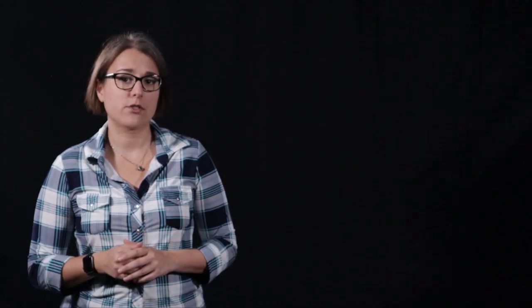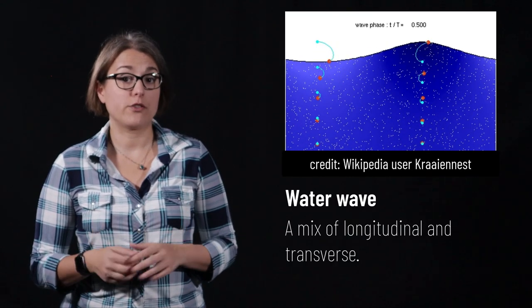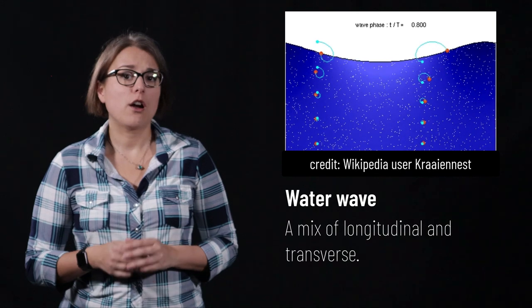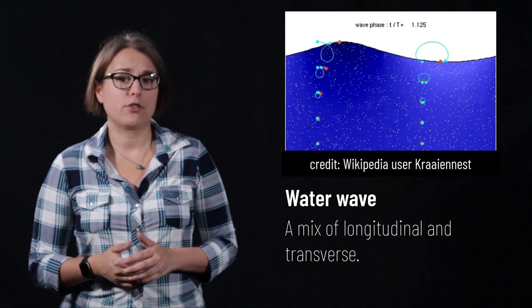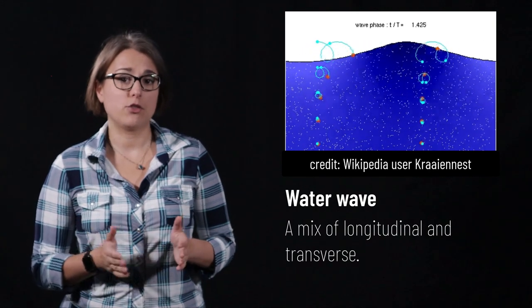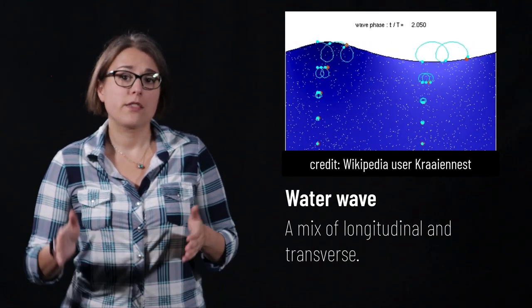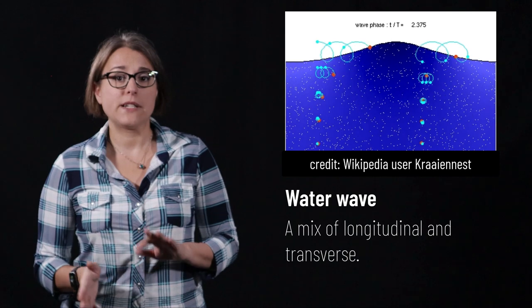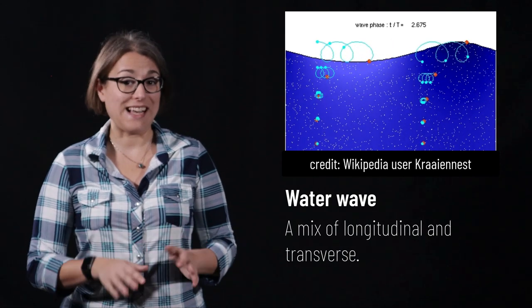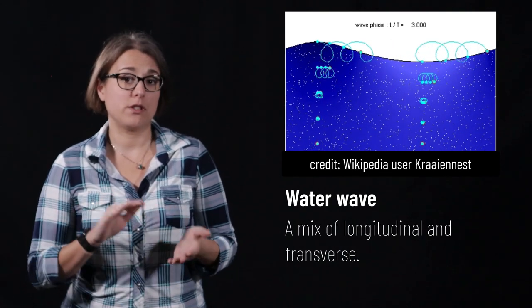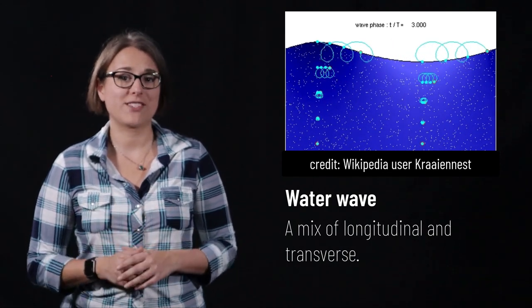There are also some waves that are neither longitudinal nor transverse. Water waves in the ocean, for example, are usually a mixture of both longitudinal and transverse — there is both up and down and side to side motion in ocean waves.